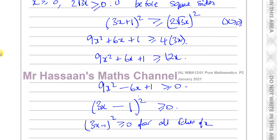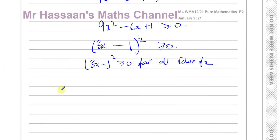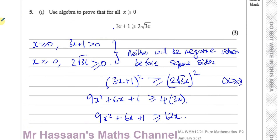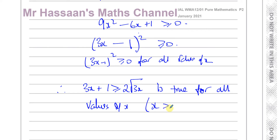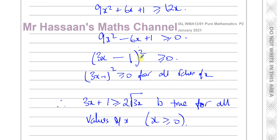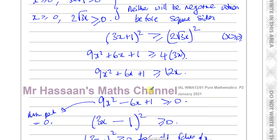We stated the condition that x ≥ 0. Therefore our original expression — 3x + 1 ≥ 2√(3x) — is true for all values of x where x ≥ 0. We've proved it because a squared bracket is always positive; it can never be negative. The minimum value is zero, so it will always be greater than or equal to zero. That completes the proof for part one.